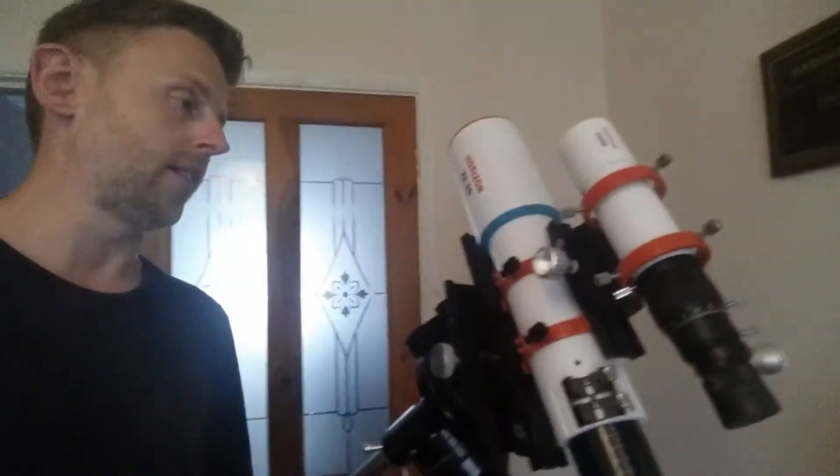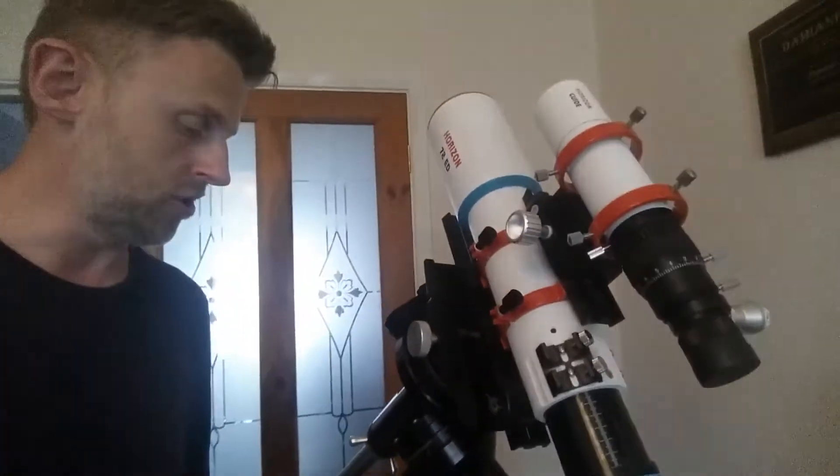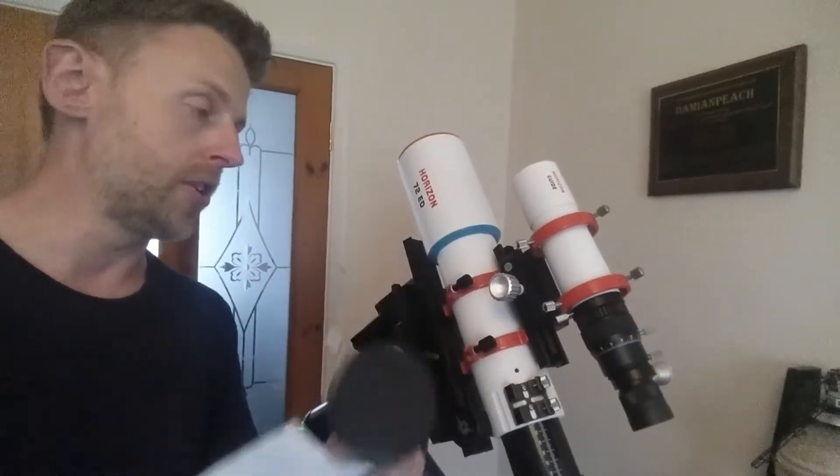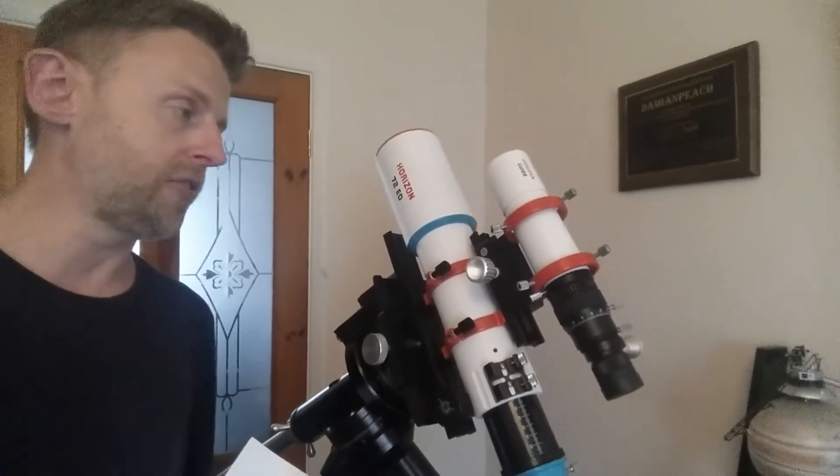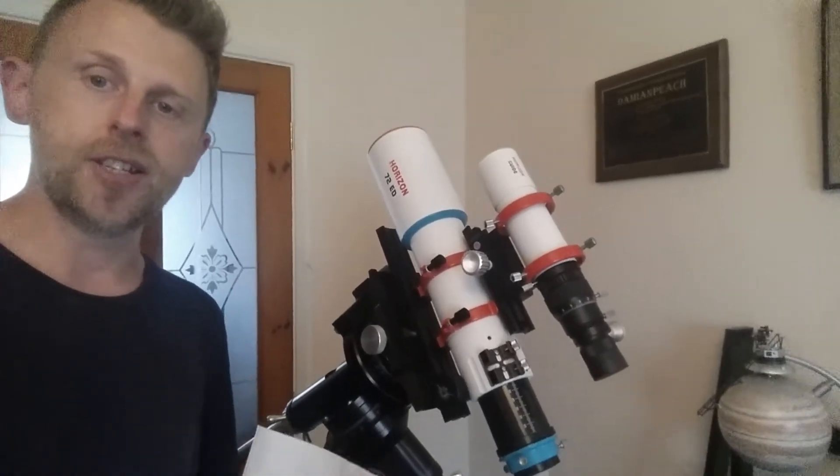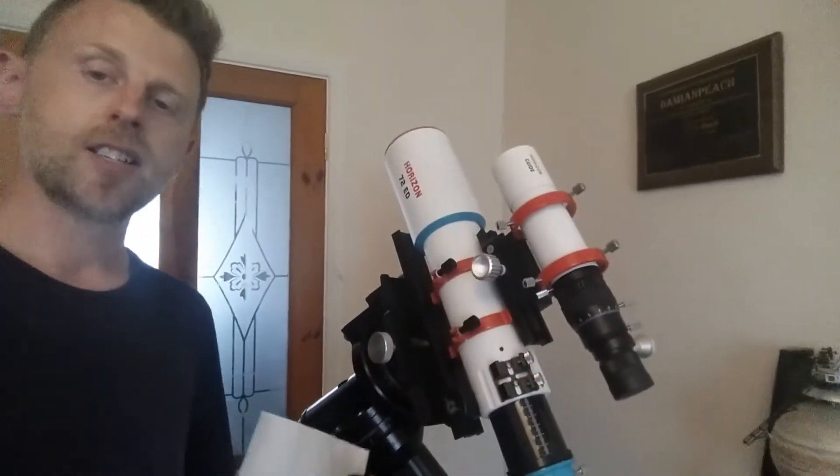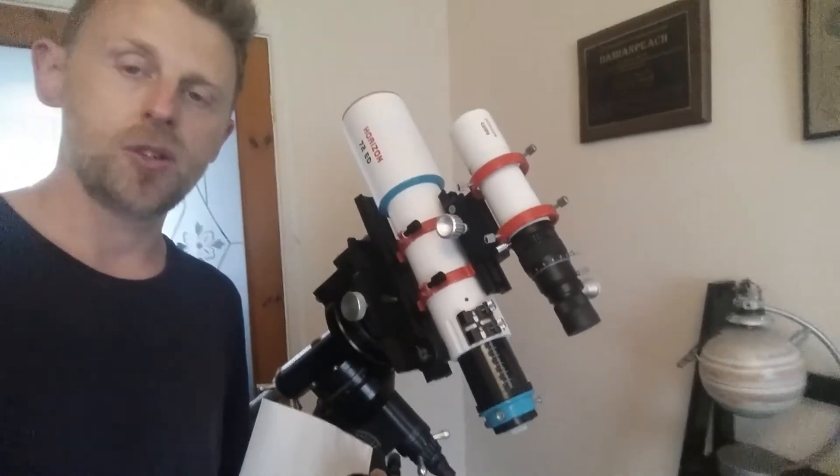So you can mount it on almost anything, which is ideal. Another particularly useful accessory the telescope comes with is this field flattener that you can use, particularly if you want sharp star images across a wide field of view using a large digital SLR camera with a full-frame sensor. You'll get nice sharp images.